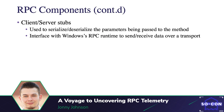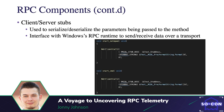Client and server stubs are used to serialize and deserialize the parameters being passed to the method, and they interface with the Windows RPC runtime to send and receive data over a transport. When the client wants to use a method, it passes the required parameters. Before those parameters can be transported to the server, the client must serialize them. The server will then deserialize or unpack the parameters before feeding them to the exposed method function being invoked.